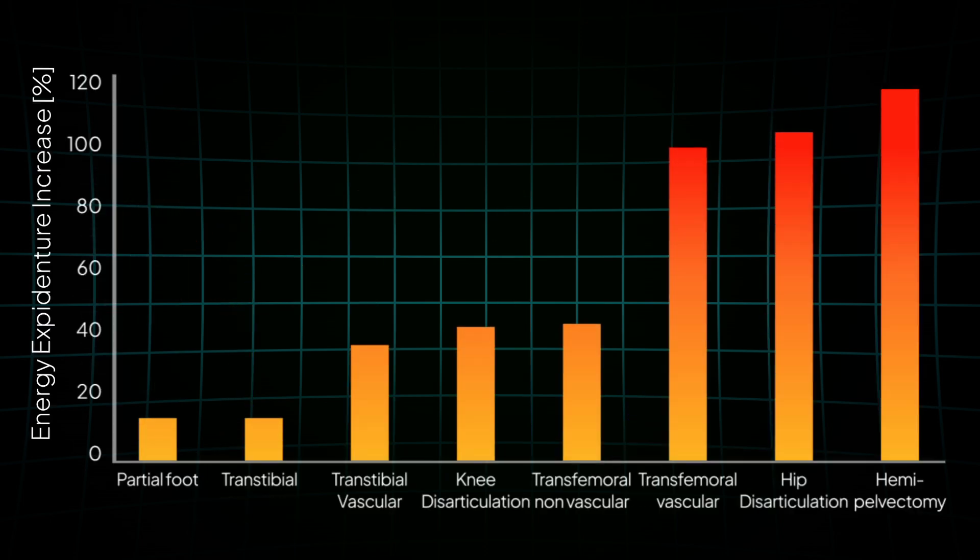But all in all, you can say the higher the amputation level, more energy is required for holding a certain walking speed. Not only the amputation level, but also the amputation cause plays a huge role. Vascular causes, for example, bring a whole set of comorbidities to the table, which are influencing the self-selected walking speed and energy requirements of the user.